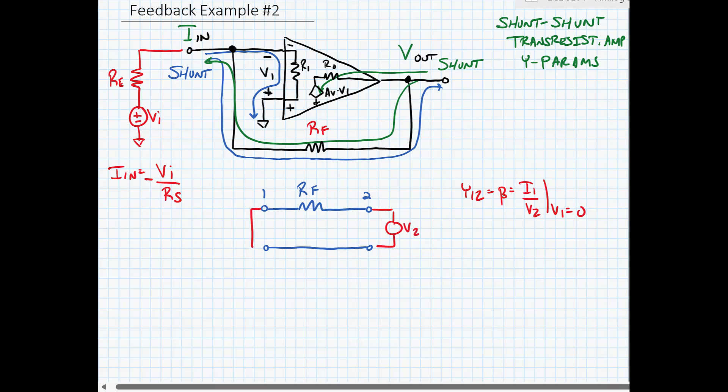We're going to short circuit port one and we're going to measure the current I1 that would flow as a result of V2. Now this is equal to minus one divided by RF.